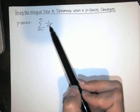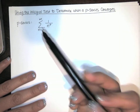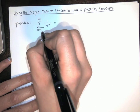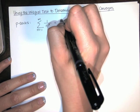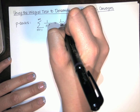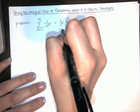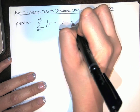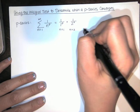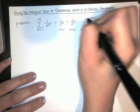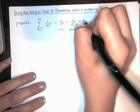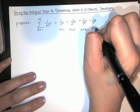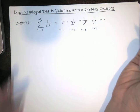Now p is generally a number, and n is the index of the summation. So if I evaluate this at n equals 1, I get 1 over 1 to the p. When n equals 2, I get 1 over 2 to the p. When n equals 3, I get 1 over 3 to the p, then 1 over 4 to the p, and so on. So this is a p-series.